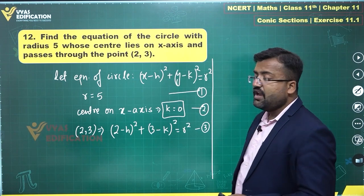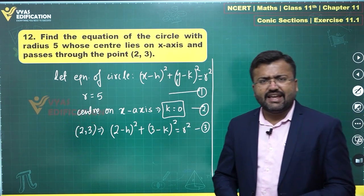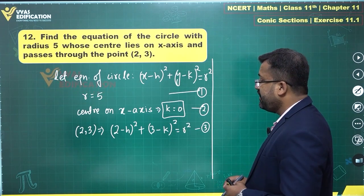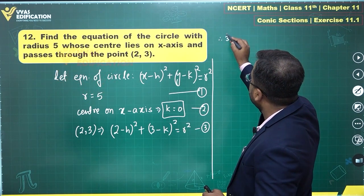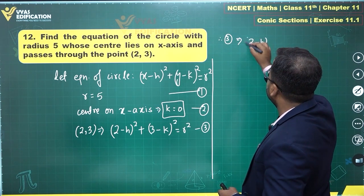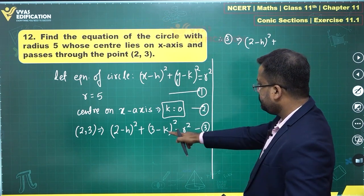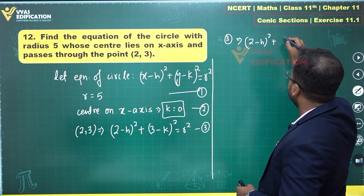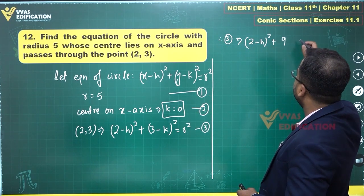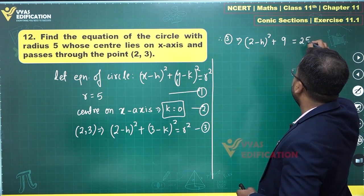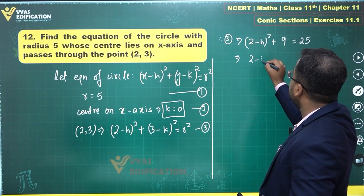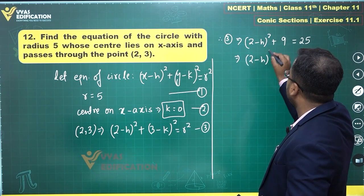The only thing that remains is to find the value of h. The third equation tells me that 2 minus h squared plus 3 minus 0 squared is equal to 5 squared. That is, 2 minus h squared plus 9 equals 25.